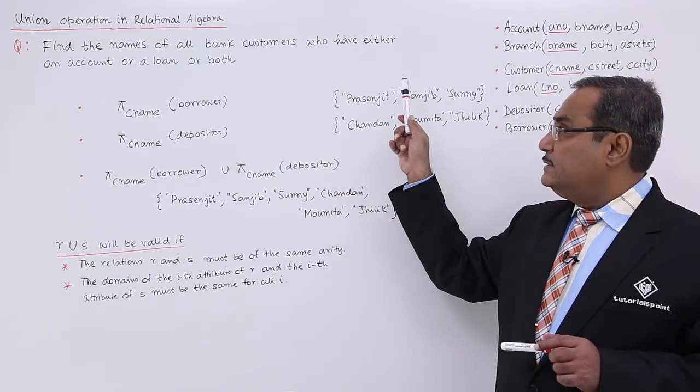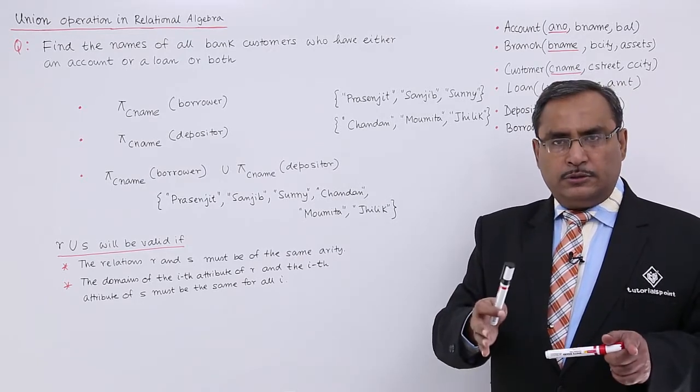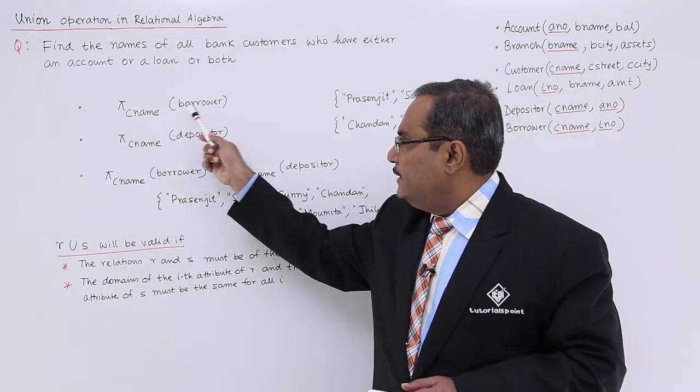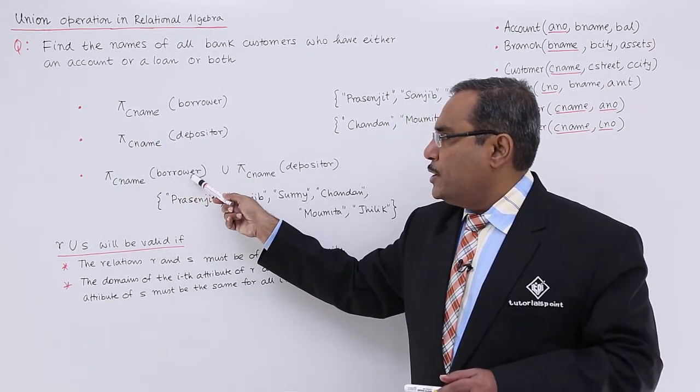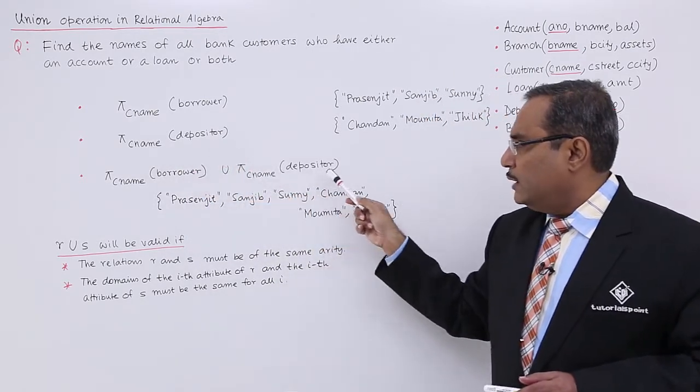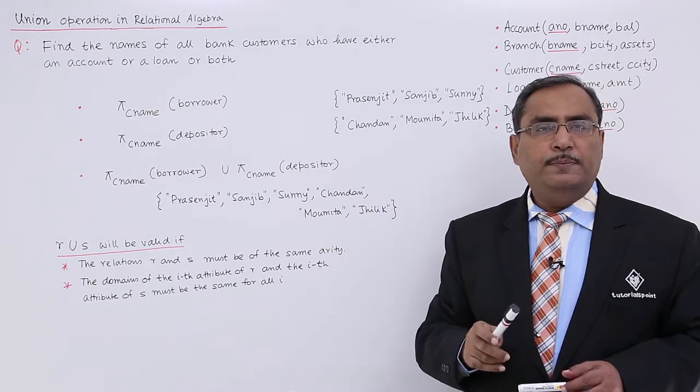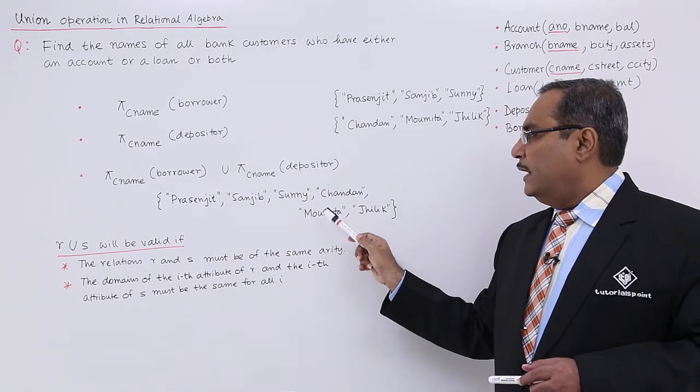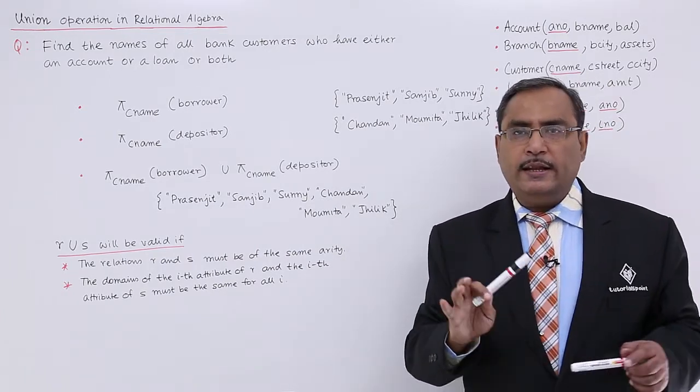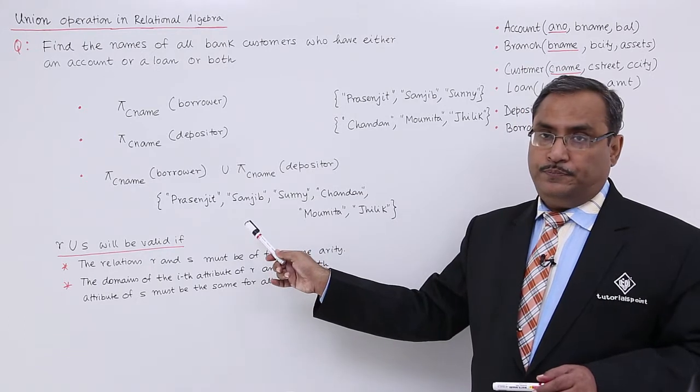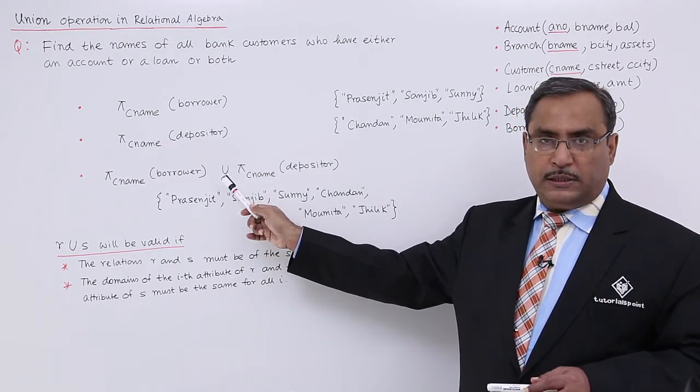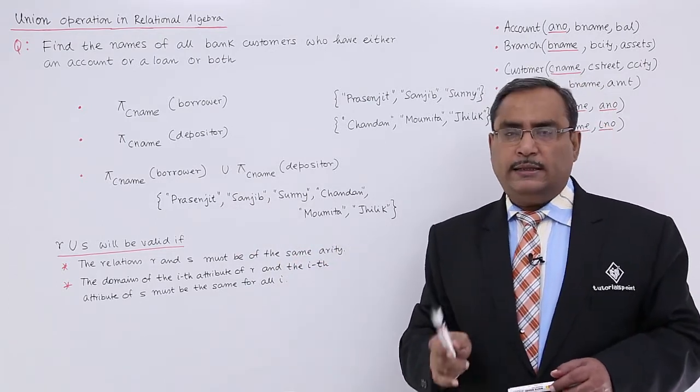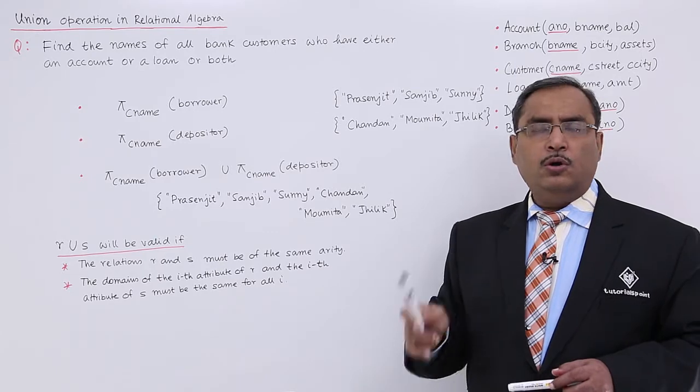But I do not require these names separately. I want to get them union so that I can get a single set of names. So I shall be writing: PI customer name operated on borrower union PI customer name operated on depositor. So these three names and these three names will be union and then I shall be getting all six names in a list. So that is my output and this is the respective relational algebraic form, and this set is containing all the customer names either having the savings bank account or loan account or both.